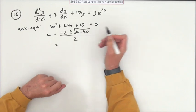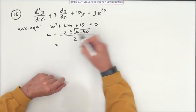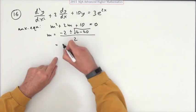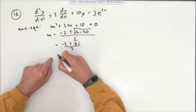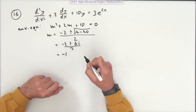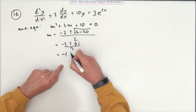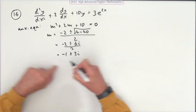So 4 minus 40 is negative 36. The square root of that would be 6i, so you've got -2 ± 6i over 2. I'm taking a lot of room here and often not a room here, so -1 ± 3i.